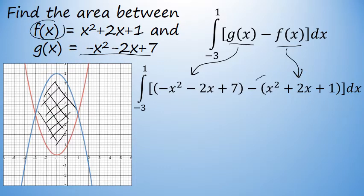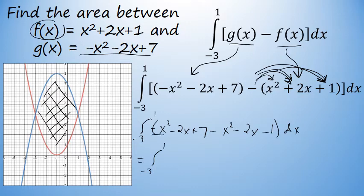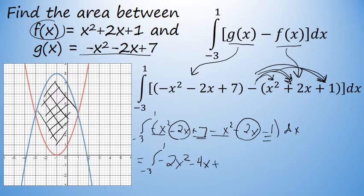It's important to realize that there will be a distribution of a negative to the second term in this subtraction. Distributing that negative yields negative x squared minus 2x minus 1. We can then combine like terms before integrating: negative x squared minus x squared is negative 2x squared; negative 2x minus 2x is negative 4x; and positive 7 plus negative 1 equals positive 6. So this integral simplifies to negative 2x squared minus 4x plus 6.